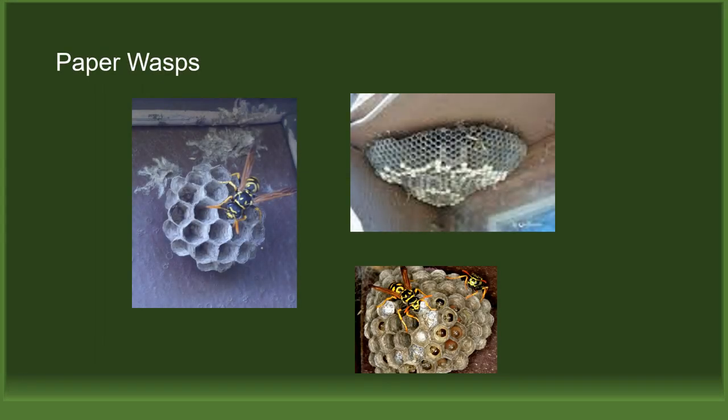The paper wasp builds nests out of wood fibers. There are many kinds of paper wasps and they don't share the same level of aggression as yellow jackets. Paper wasps have umbrella-shaped nests that are often found suspended under the eaves of buildings. These nests are usually relatively small and do not have more than 30 members at a time. These wasps are relatively non-aggressive, good pollinators, and beneficial to gardeners.